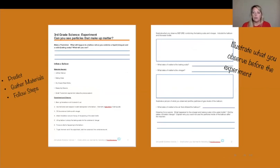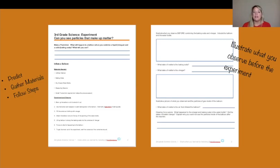First, you're going to gather your materials and follow the steps at the bottom of page one. Before you begin, I want you to illustrate what you observe. Make sure you include underneath the illustration the state of matter the baking soda is in and the state of matter the vinegar is in. Don't worry about the bottom of page two — that will come later in the lesson.